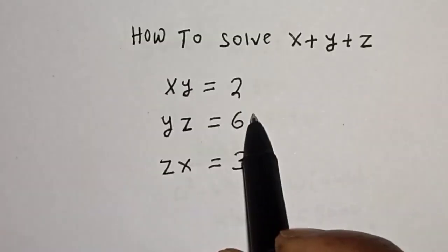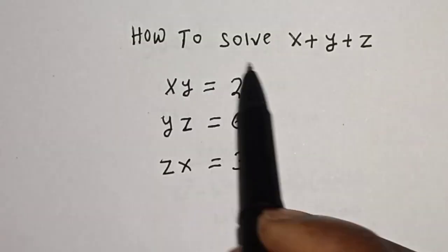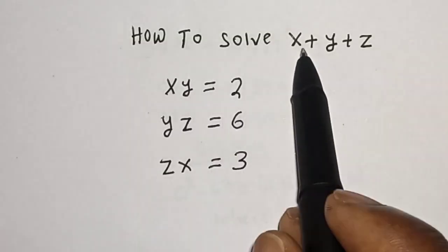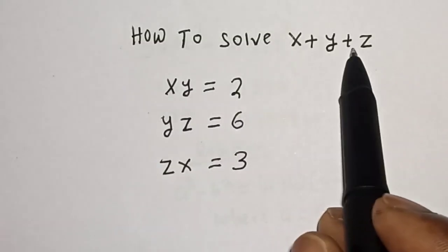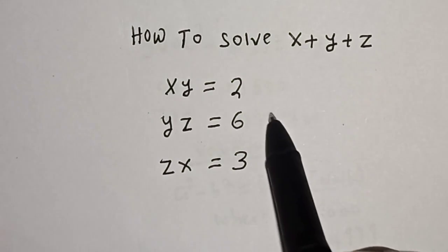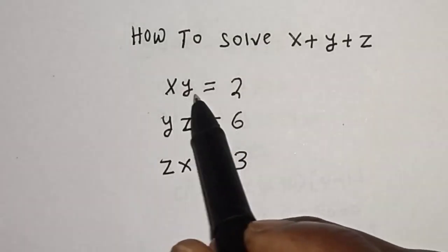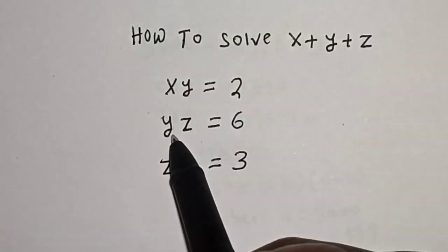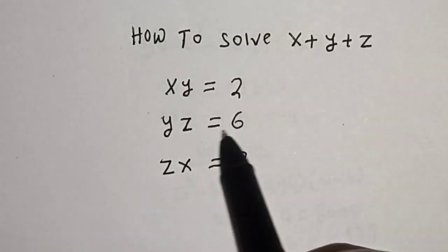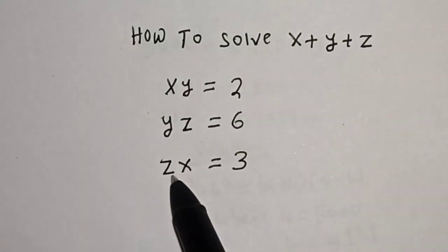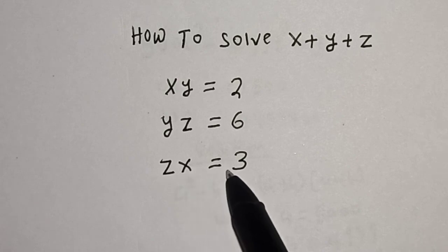Hello, welcome to Magis. In this class, we want to find the value of X plus Y plus Z, from these equations: X·Y is equal to 2, Y·Z is equal to 6, and Z·X is equal to 3.